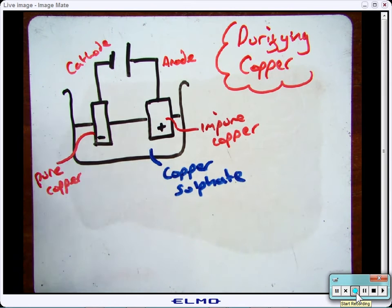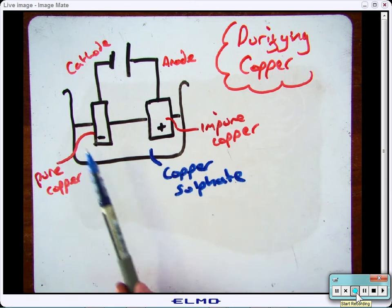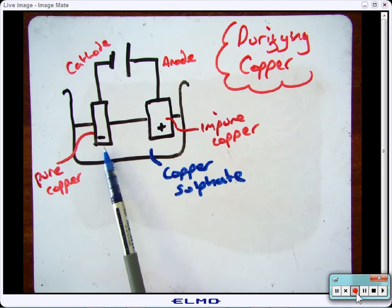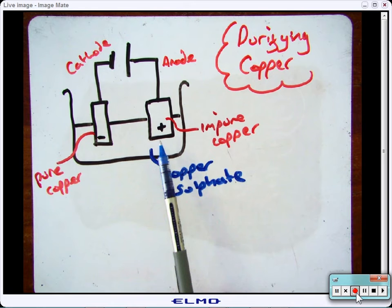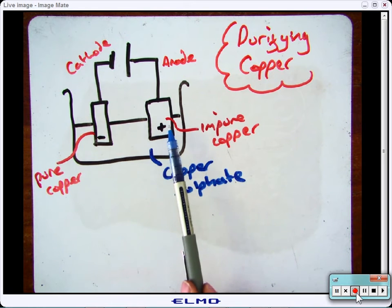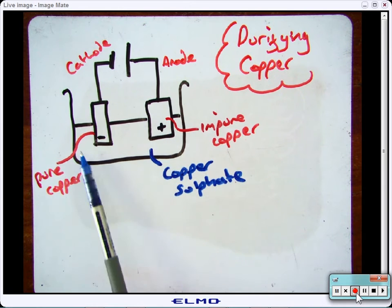So for example, what will happen is they will set up an electrolysis process with two electrodes. One with a small amount of pure copper and one with a large amount of impure copper that you want to purify. And the electrolyte that they'll use is copper sulphate.